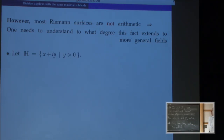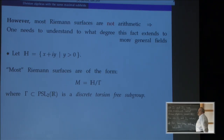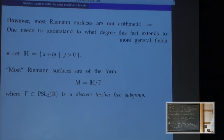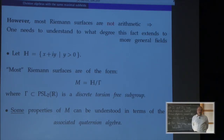Let H be the upper half plane. As everybody knows, most Riemann surfaces are obtained by taking quotients of H by some discrete torsion-free subgroup of PSL(2,R). Certain properties of this Riemann surface can be understood in terms of the associated quaternion algebra. A good reference for that is the book by Maclachlan and Reid, where they have lots of examples and explanations.